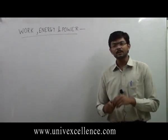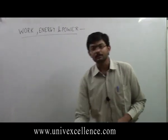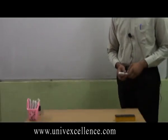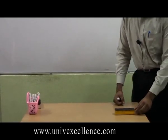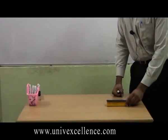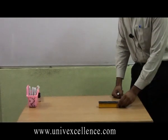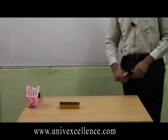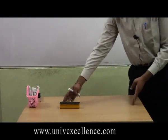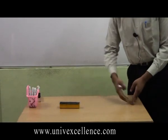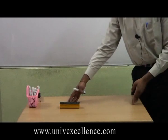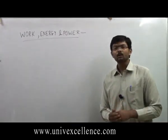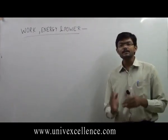Here the definition of work is something different. Suppose this is an object with mass m. I keep it here and apply force from one direction. We will see that the object is moving when I am applying the force, and I apply the force to move it to a new position. I move this duster from the first position to the second position, so there is a displacement. Since force is applied and displacement occurs, we say that work has been done.